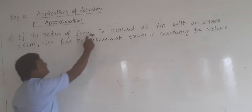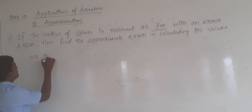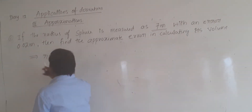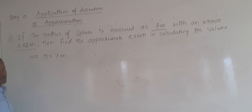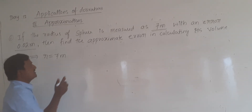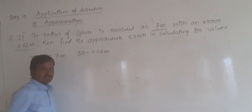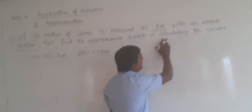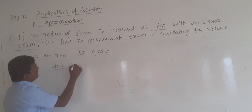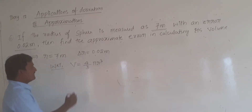If the radius of a sphere is measured as 7 meters, so clearly what they have given: radius r is equal to 7 meters. With an error of 0.02 meters — with an error means either it is increasing or decreasing in the radius — that is delta r is equal to 0.02 meter. The volume is given by the formula 4 by 3 pi r cubed.